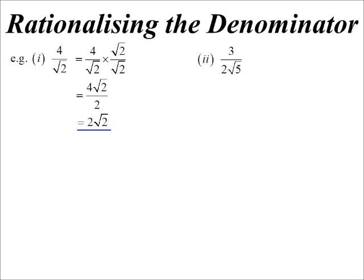When you have something like this, 3 on 2 root 5, I was going to say the biggest mistake. It's not a mistake, it just makes it longer. You don't have to multiply by 2 root 5. You only have to multiply by the surd part.